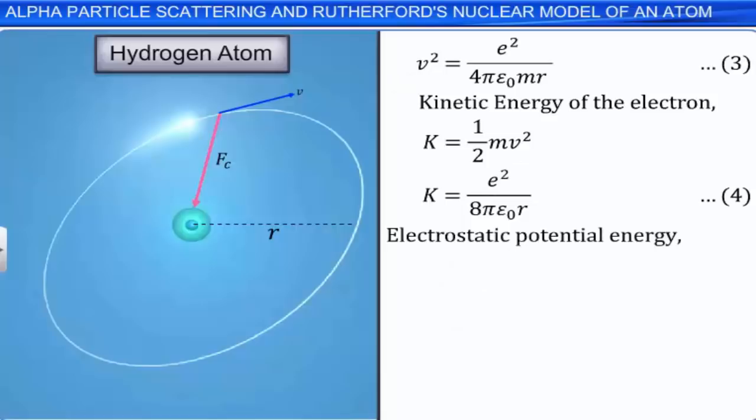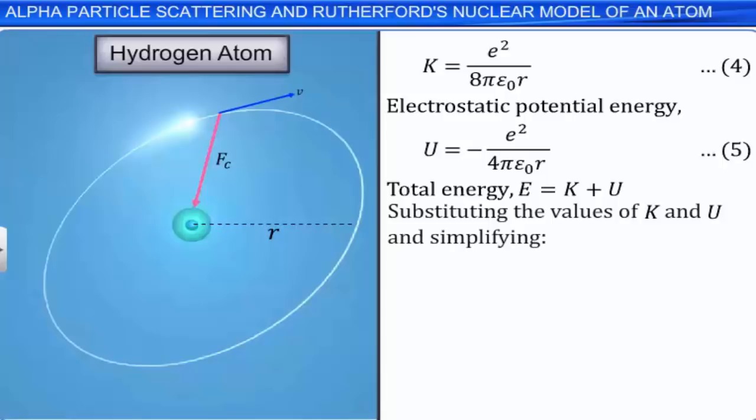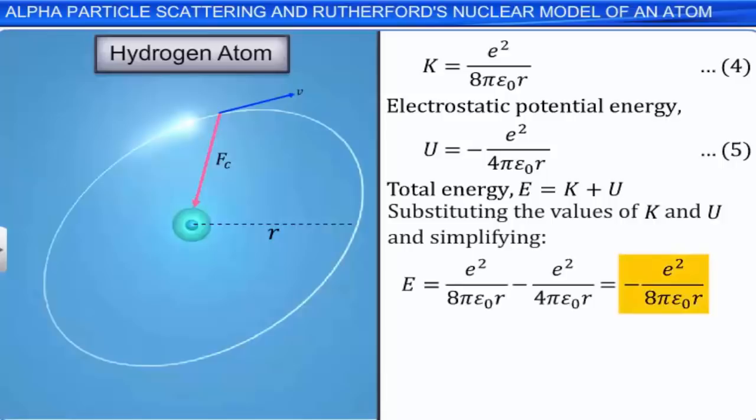The total energy E of the electron in the hydrogen atom equals the sum of kinetic energy K and potential energy U. By substituting the expressions for K and U and simplifying, we get E = −e²/(8πε₀r). So the total energy of the electron is negative, which implies that the electron is bound to the nucleus.